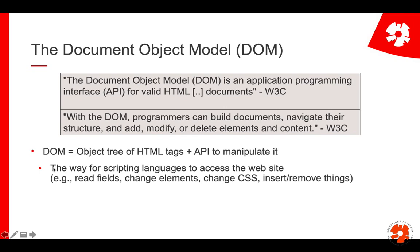This object model is basically a tree of objects — parts of your website — and these objects represent HTML tags. This is the object tree, this is the DOM, and then you have methods to manipulate it and to access different elements, read their attributes and so on. This is the way for scripting languages to access the website.